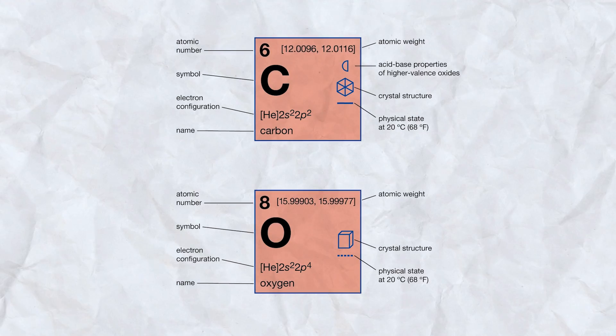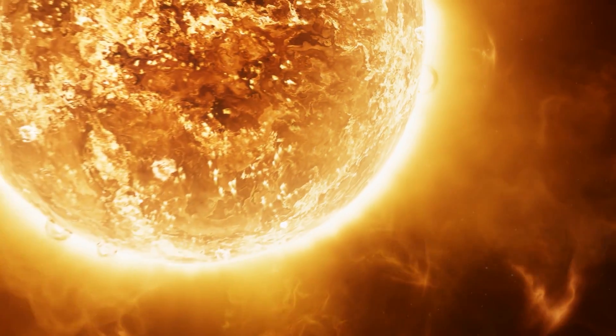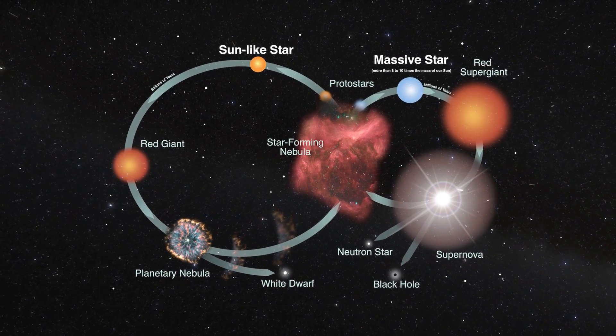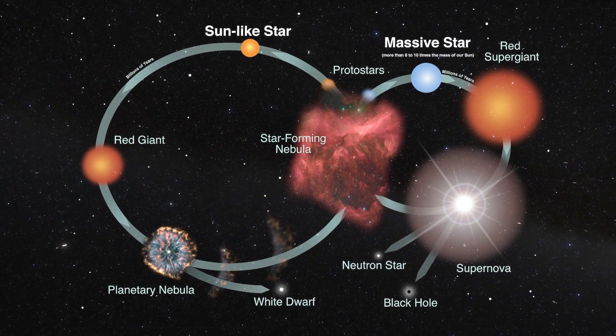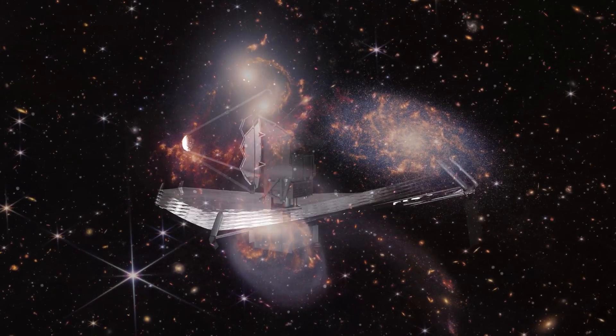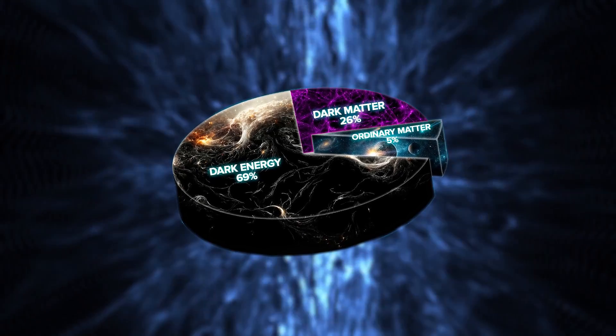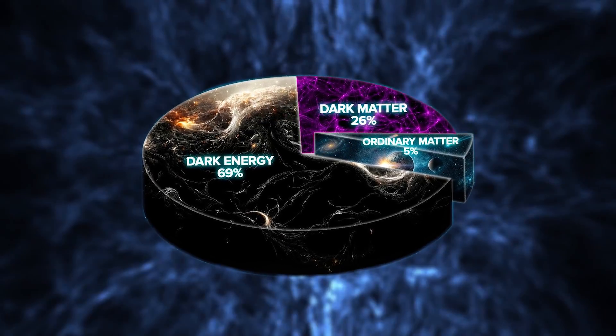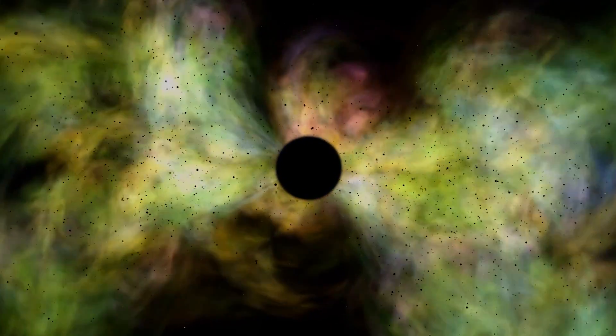Finding heavy elements like carbon and oxygen in these galaxies is another surprise. These elements are usually cooked up inside stars and scattered around by exploding stars. Their presence hints at a super-fast star cycle in the early universe, with stars forming, living fast and dying young, spewing out the ingredients for the next generation. JWST's discoveries are rewriting the history of the cosmos. They're forcing us to confront the mysteries of dark matter and dark energy and question how galaxies really come together. It's like finding a whole new chapter in the story of the universe, one that's full of twists and turns we never saw coming.